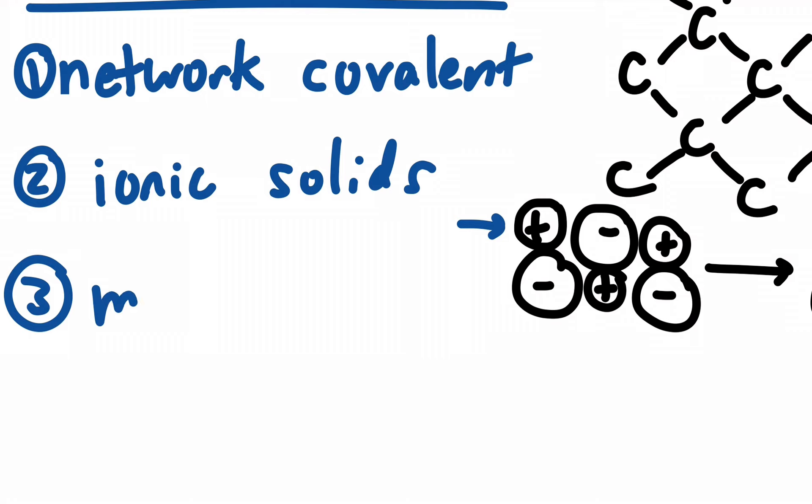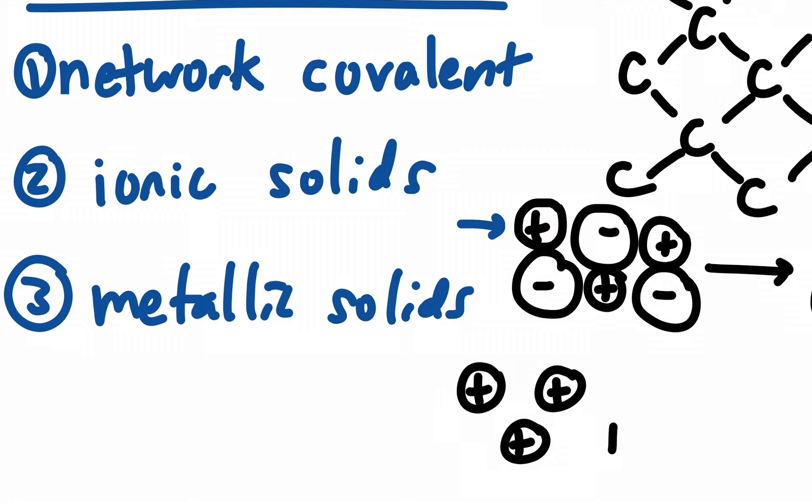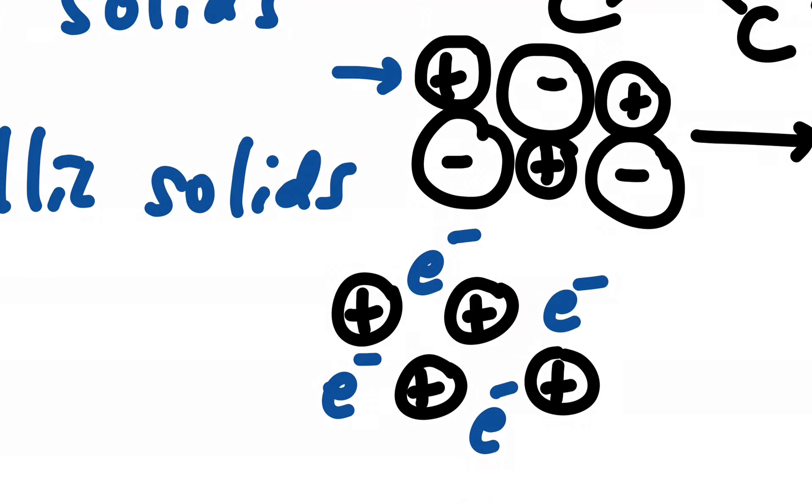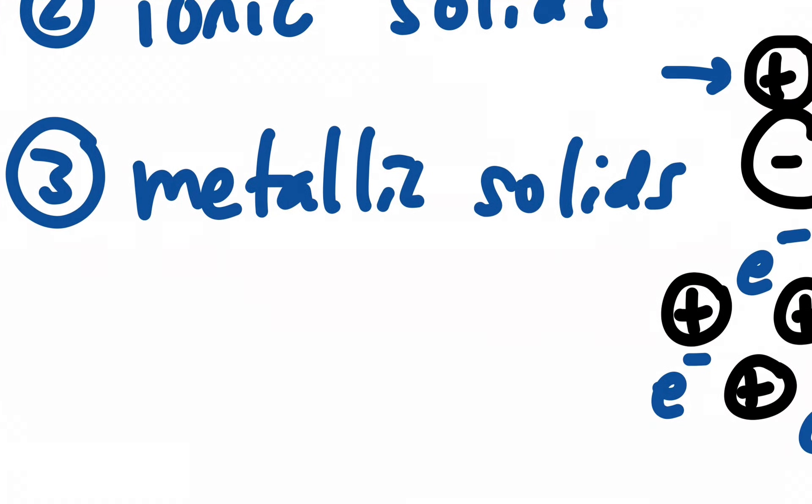Next we get to metallic solids. Metallic solids are essentially positively charged nuclei of whatever substance you're talking about, and they are swimming in a sea of mobile electrons so that they conduct and they're malleable. Because if you tried to do what we just did up here, you would still have contact with the nuclei and the electrons and you wouldn't break it. So metals bend. They don't break as easily as ionic solids.